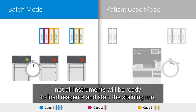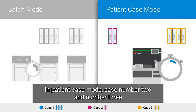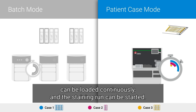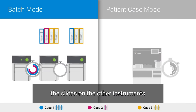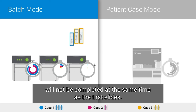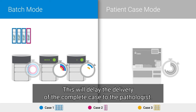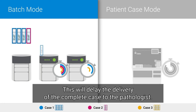In batch mode, not all instruments will be ready to load reagents and start the staining run. In patient case mode, case number 2 and number 3 can be loaded continuously and the staining run can be started. With the delayed start, the slides on the other instruments will not be completed at the same time as the first slides, which will delay the delivery of the complete case to the pathologist.